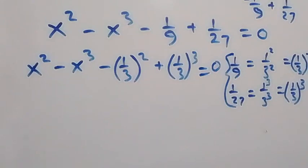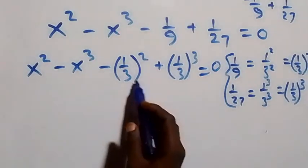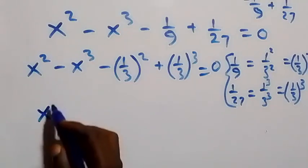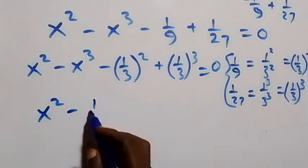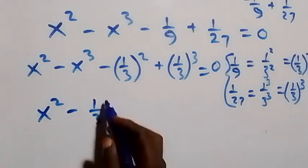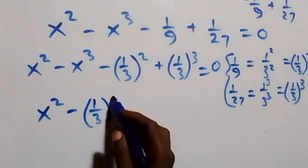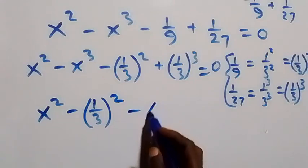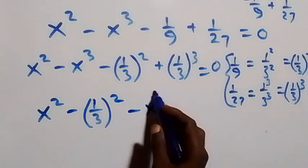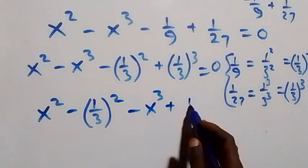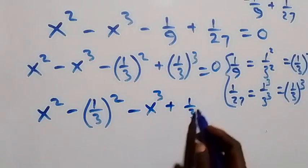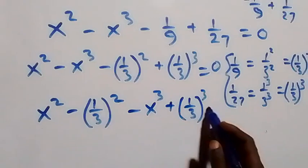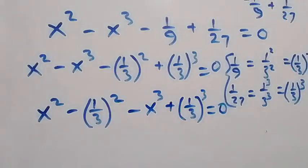From here, let's bring the squares together and the cubes together. We have x squared minus 1 over 3 squared, then minus x cubed plus 1 over 3 cubed, equals to zero.